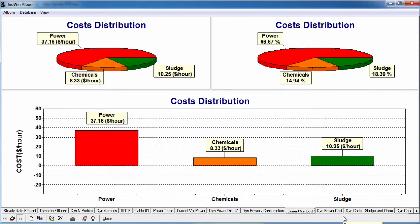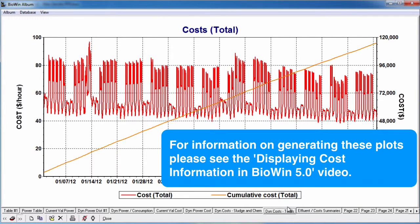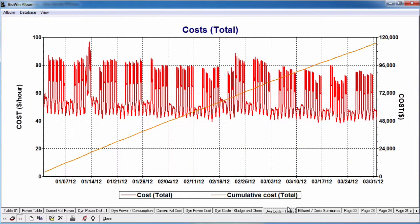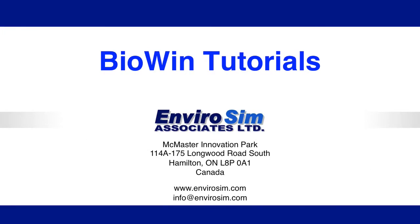Electricity costs are used to determine the overall cost of power or energy in BioWin 5. For more information on displaying this cost information, please see the video entitled Displaying Cost Information in BioWin 5.0. This concludes our tutorial on specifying electricity costs in BioWin 5. More information on the new features in BioWin 5 can be found on our website as well as in our new help manual. Please also check out our video library for additional videos on how to use BioWin.